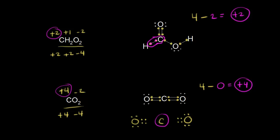We can verify oxygen as well. Oxygen should have six valence electrons, and counting the electrons around it gives eight, so six minus eight equals minus two for the oxidation state of oxygen in CO₂.